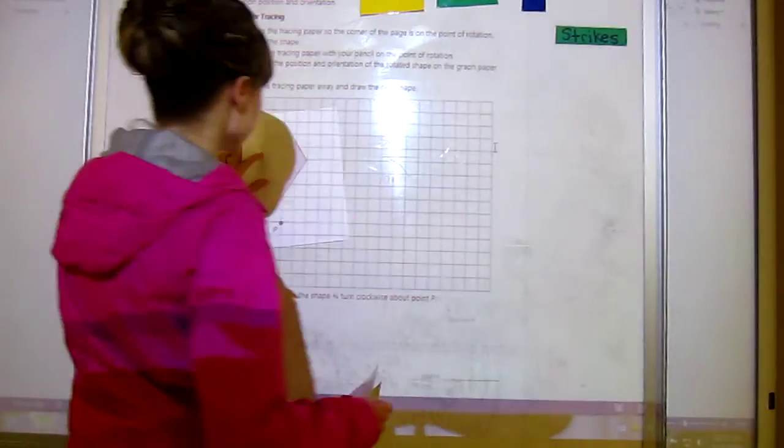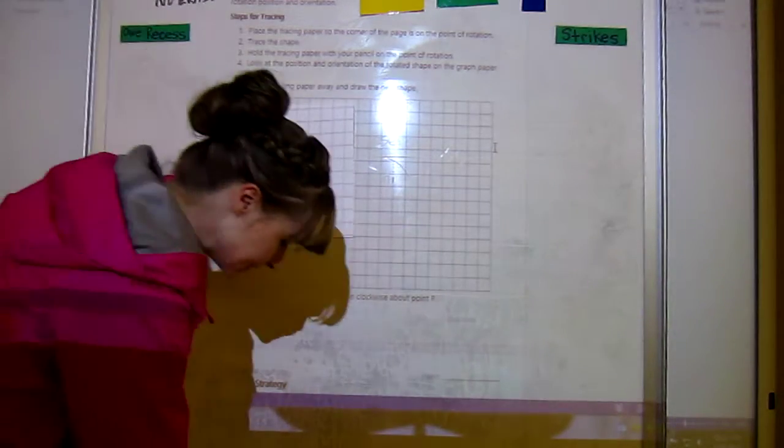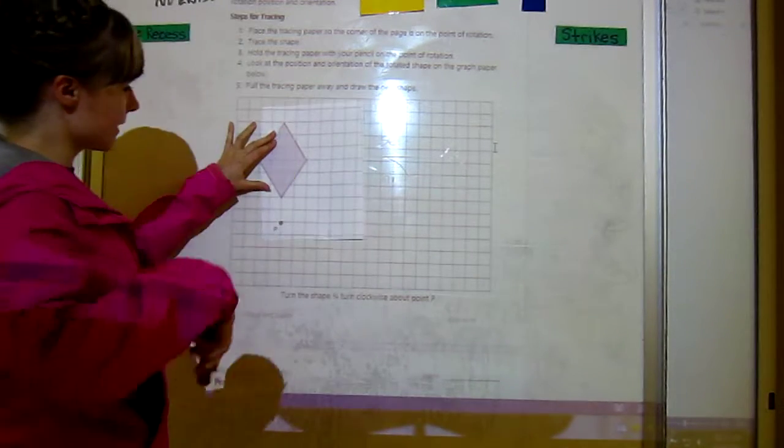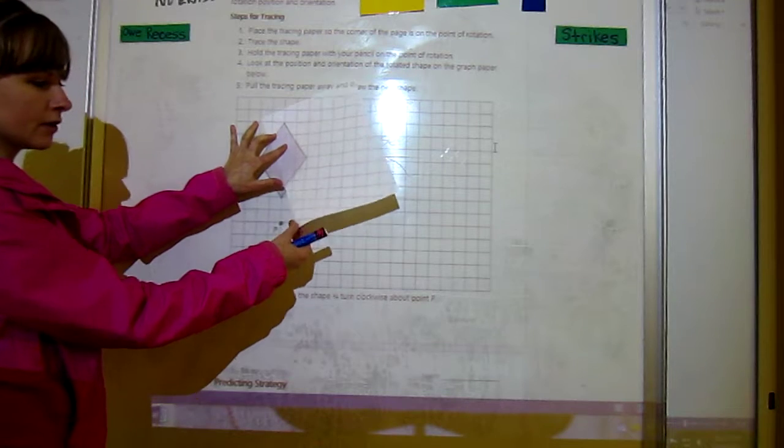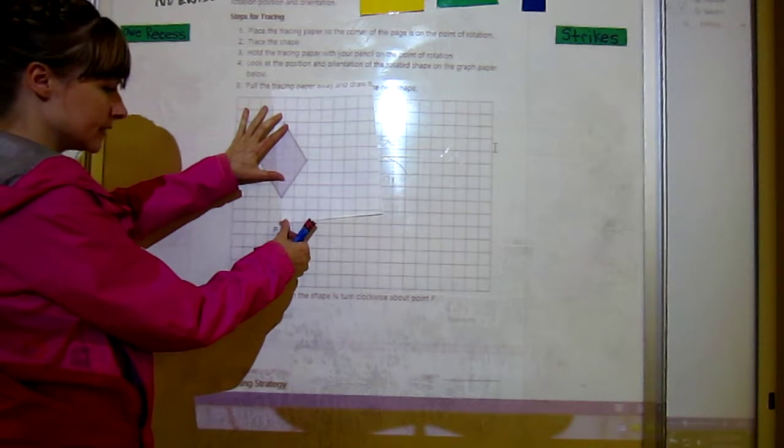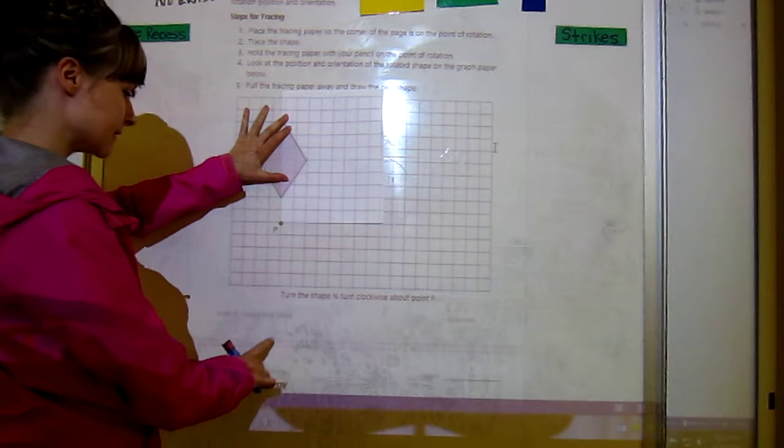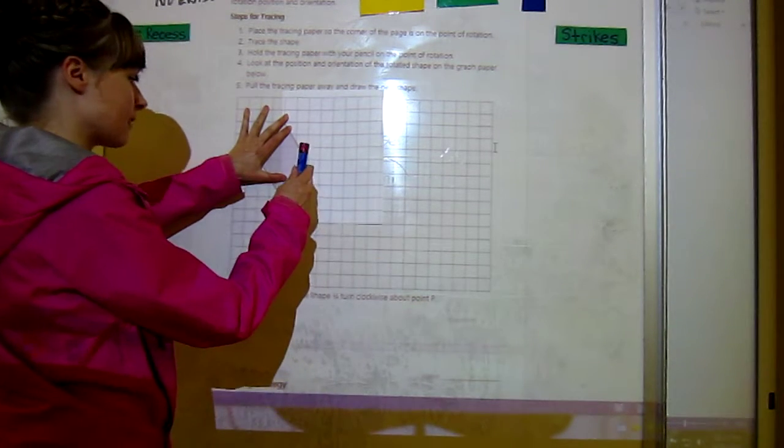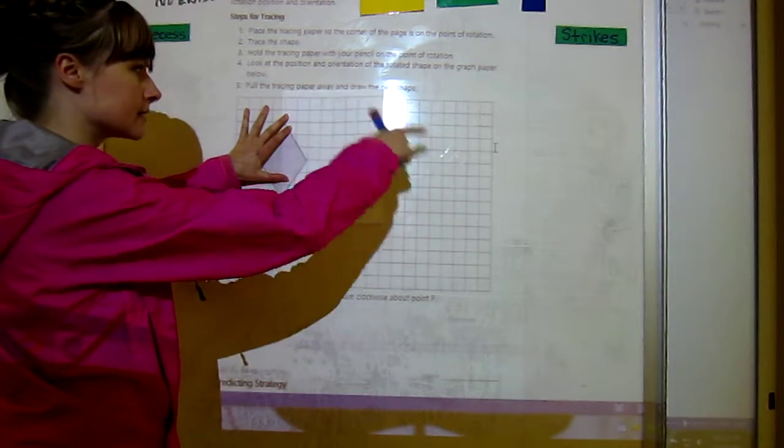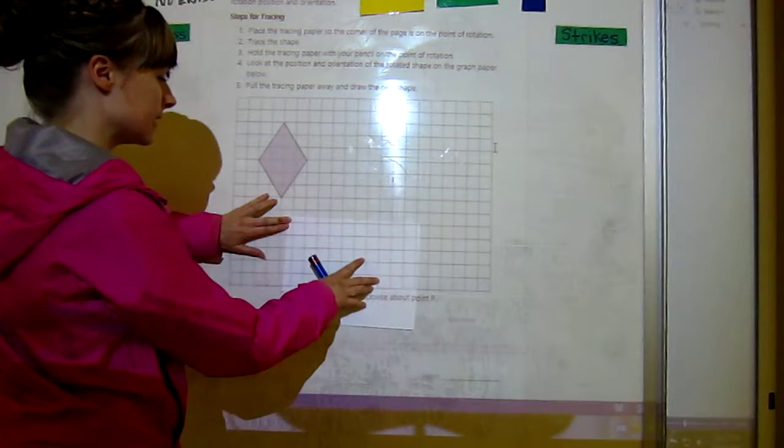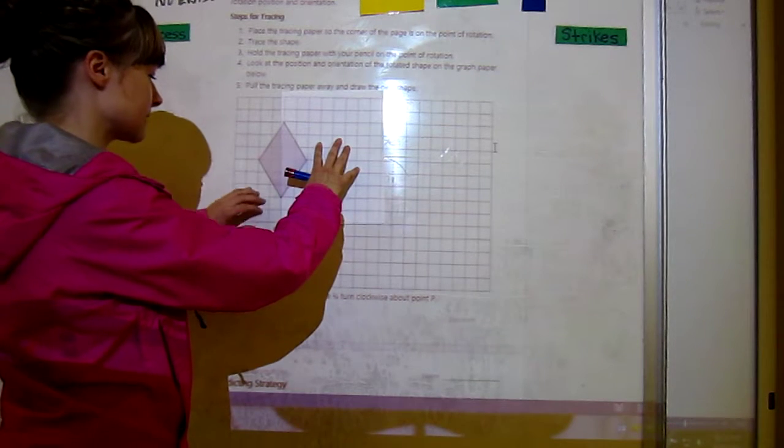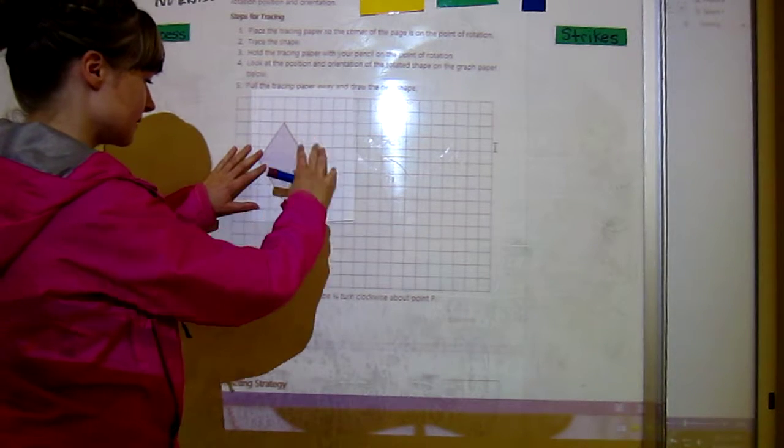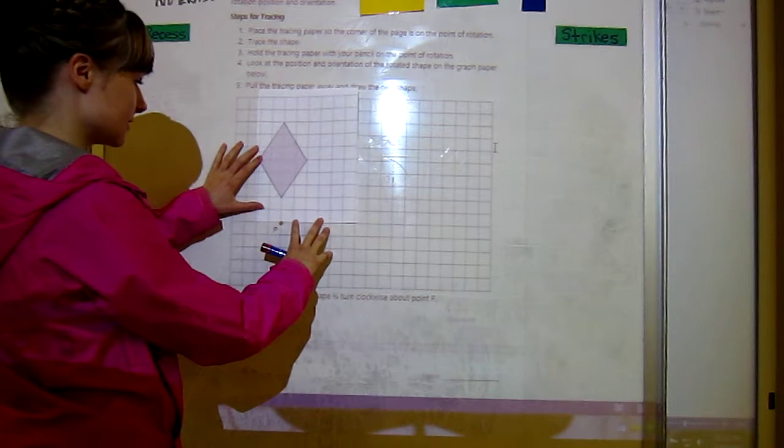Okay, I think you can see that. The first step is to grab our marker so you can see. We need to put the corner of the paper on point P, which is where we're turning, because it says turn the shape a quarter turn clockwise about point P. Clockwise is going this way, and a quarter turn is one 90-degree angle, one right angle. Oh wait, it doesn't fit on the paper. All right, we won't follow that rule because our shape doesn't fit on the paper.